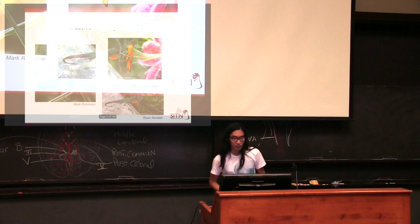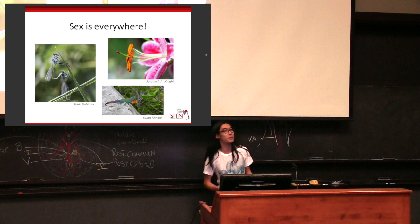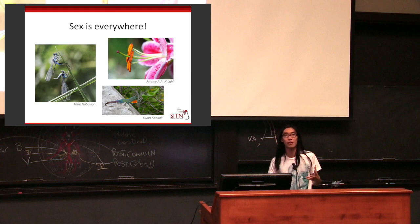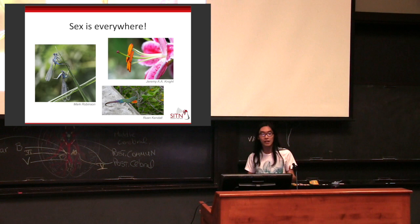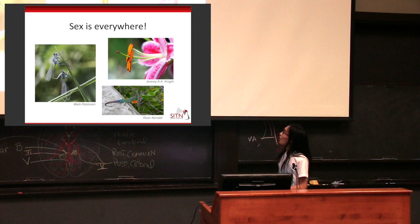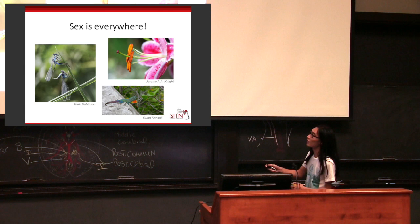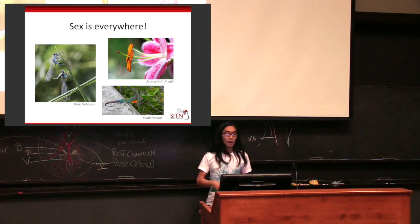My first claim is that sex is everywhere, and I don't think this is particularly controversial, but I don't mean this in the sort of curmudgeonly, grandmotherly sort of way. I mean that if you go out into nature, you can observe the effects or the act of sex pretty much all around you. This is a picture of a plant attempting to have sex. These are damselflies having sex, and this is an anole signaling with his dewlap, probably trying to have sex.